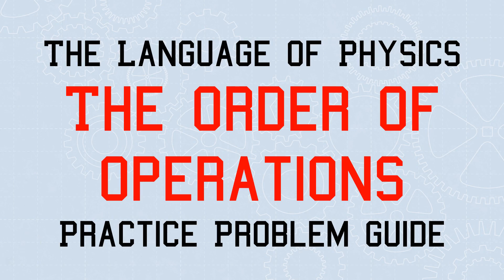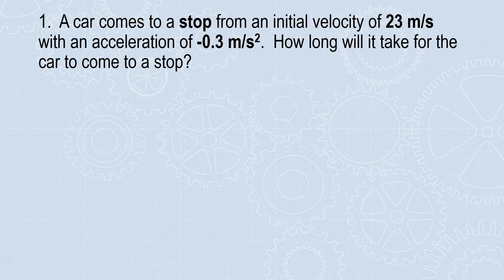Welcome to the Order of Operations Practice Problem Guide. Problem 1: A car comes to a stop from an initial velocity of 23 meters per second with an acceleration of negative 0.3 meters per second squared. How long will it take for the car to come to a stop?